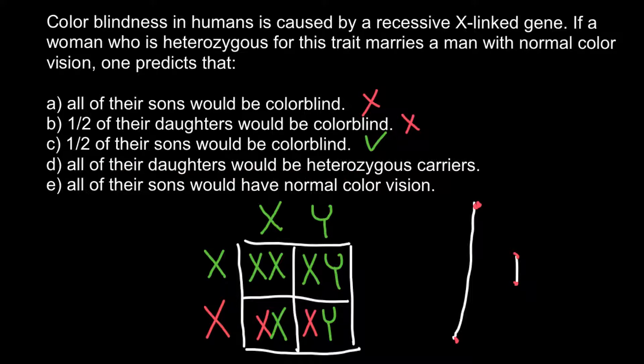Answer D — all of the daughters would be heterozygous carriers — this is not true; only 50% of the daughters would be heterozygous carriers. Answer E — all of the sons would have normal color vision — this is also not true because only 50% of the sons would have normal color vision.